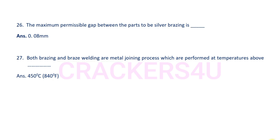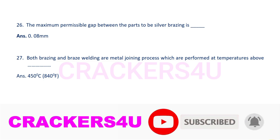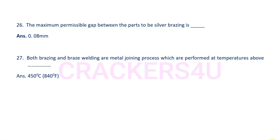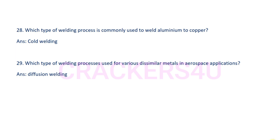Question 27: Both brazing and braze welding are metal joining processes which are performed at temperatures above dash. Answer: 450 degrees Celsius or 840 degrees Fahrenheit. Question 28: Which type of welding process is commonly used to weld aluminum to copper? Answer: Cold welding.